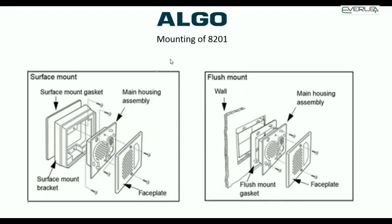There are two mounting options. For surface mount, you use the surface mount gasket against the wall to prevent moisture ingress — just make sure the wall doesn't have water running down it, such as through mortar cracks, as the seal won't handle that. You then have your surface mount bracket, the main assembly housing, and the face plate — the cable plugs in and if you have door control, just two wires for the relay. For flush mount, additional flush mount brackets are required; contact us for those. The most common installation is surface mounting.